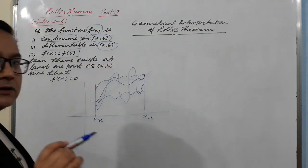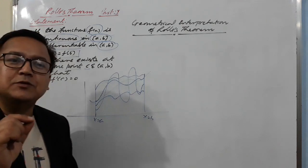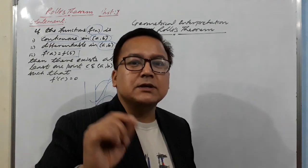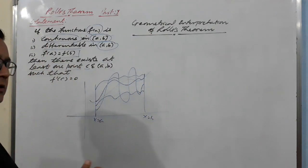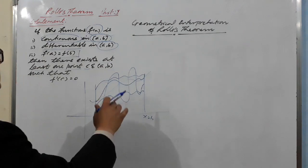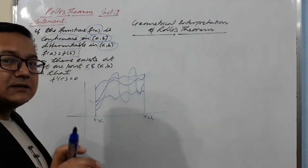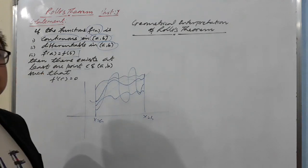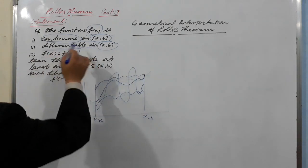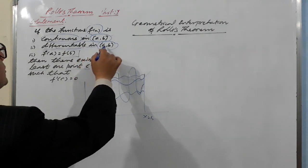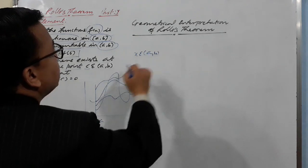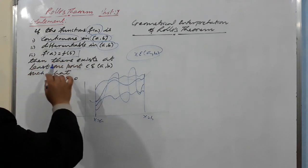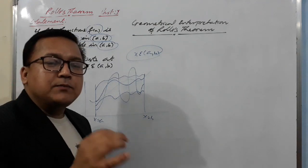Differentiable in the open interval (a, b): first we need to know that the derivative of a function gives you the slope of the tangent. So differentiable means geometrically that a tangent at every point on the graph can be drawn. Differentiable in (a, b) means we can draw a tangent at every point x belonging to the open interval (a, b).